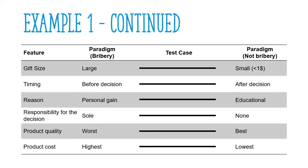First, let us construct our line drawing table by stating the feature, then placing the positive and negative paradigms on two opposite ends, and then placing a line between them. The first feature is gift size. From the description, it is clear that the gift size is quite pricey and big, so it is safe to assume it is placed near the large side, as marked by the X. We move on to check the timing of the gift. The gift was presented after the decision was made, so it is closer to the non-bribe side of things.